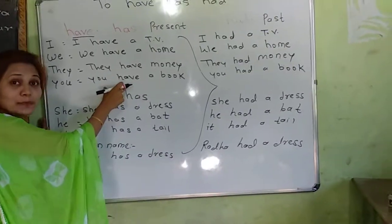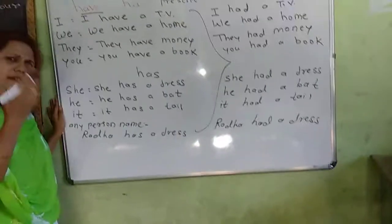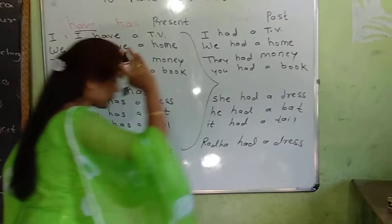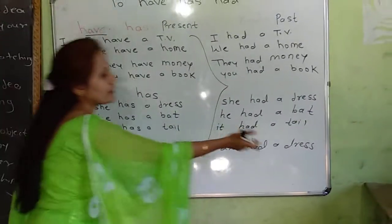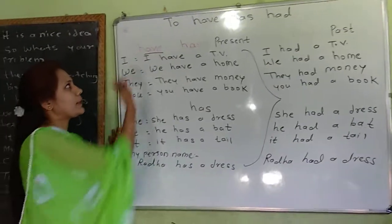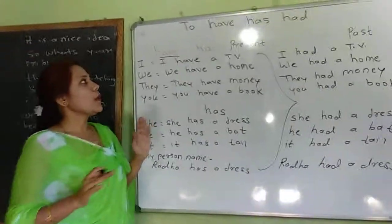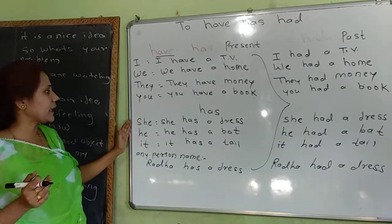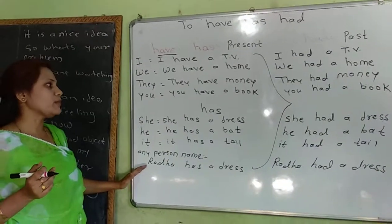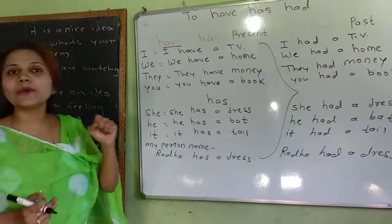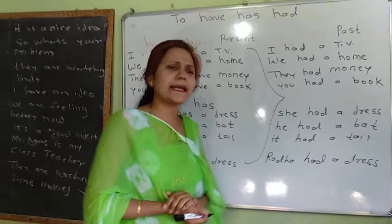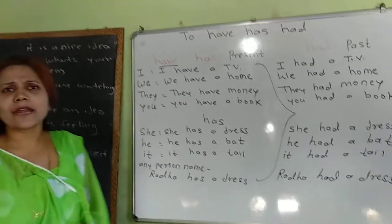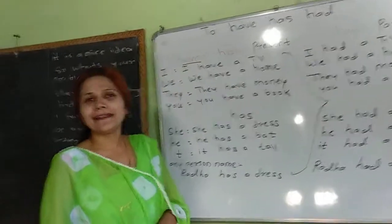You have a book. Radha has a dress — Radha had a dress in past tense. So remember: when the subject is I, we, they, or you, use have in present and had in past. When the subject is she, he, it, or any person's name, use has in present and had in past. Have and has are used in present tense; had is used in past tense. Thank you.